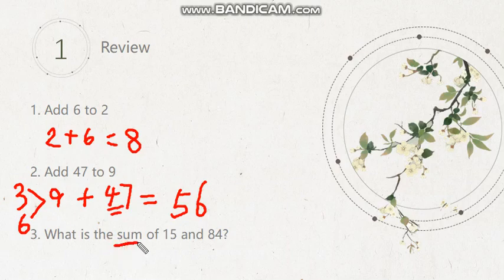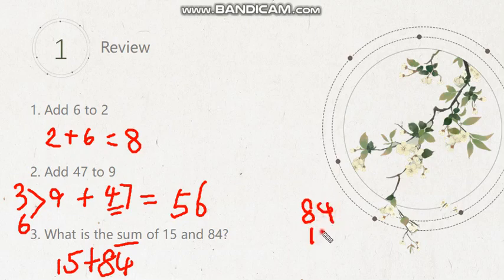What is the sum? Who remembers this? Sum means the total. We still use plus. 15 plus 84. You can do it in the vertical form. And that gives you 4 plus 5, 9. And 1 plus 8, 9. 99 as your answer.